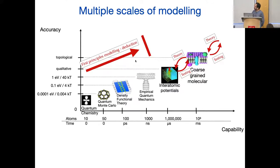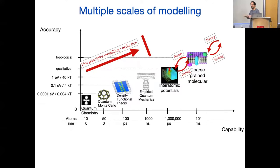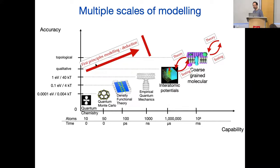The reason first principles modeling is a synonym for electronic structure calculation in the current literature is because that's where taking something from below and systematically deriving the consequences has been successful. Going beyond electronic structure and asking where atoms move without reference to the electrons — people have not been able to derive that systematically. That's why I'm trying to reclaim this word.